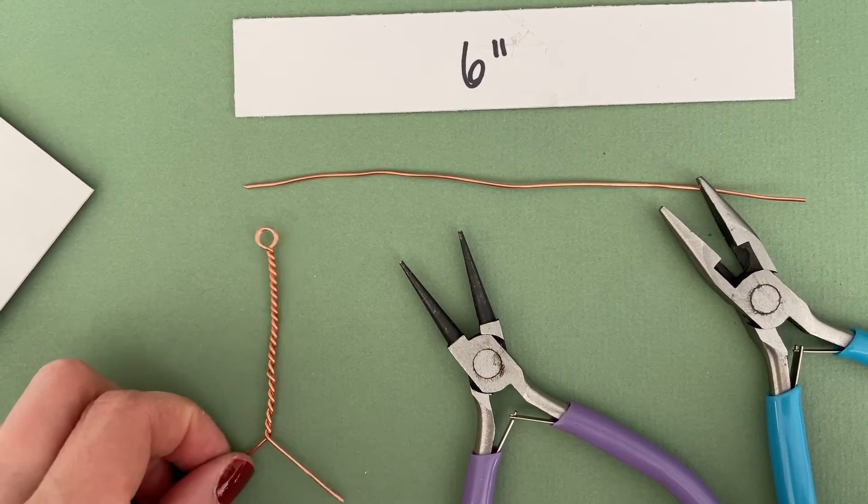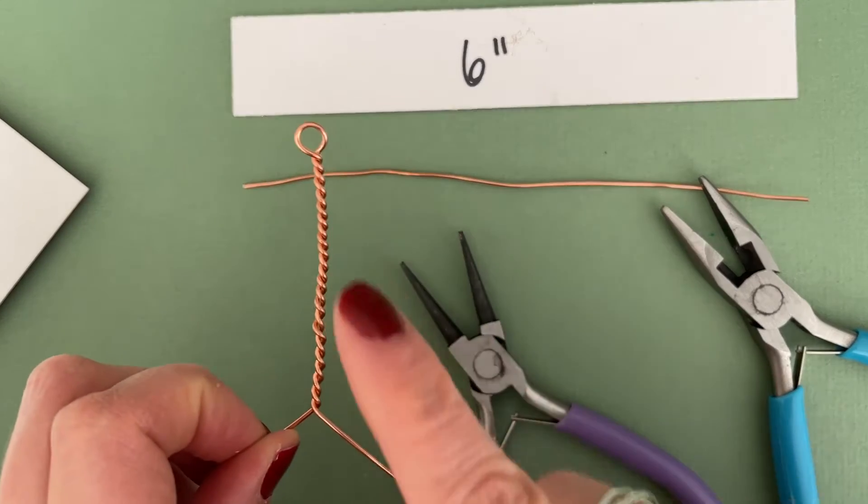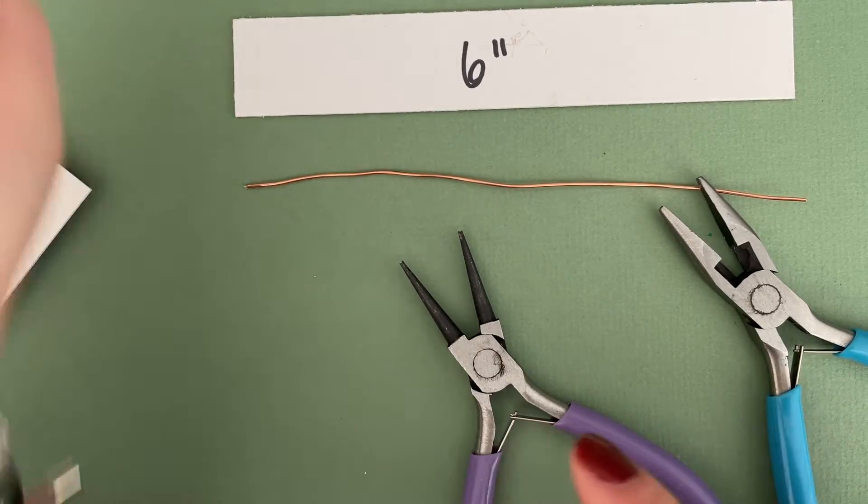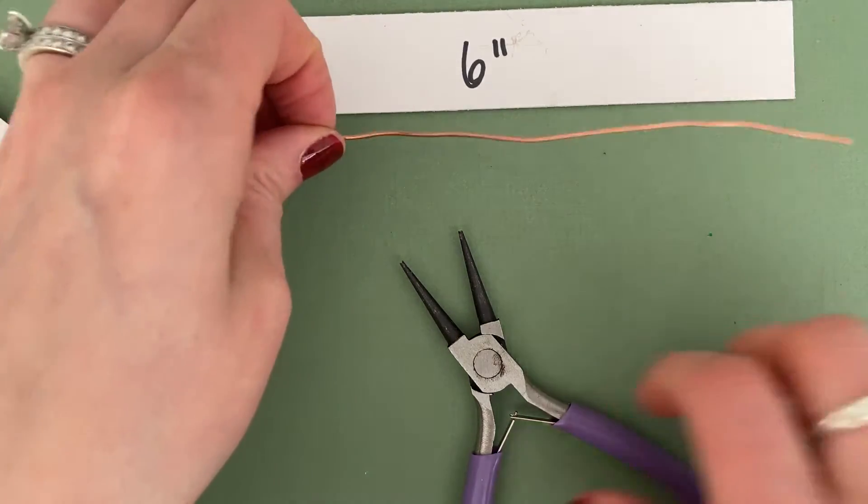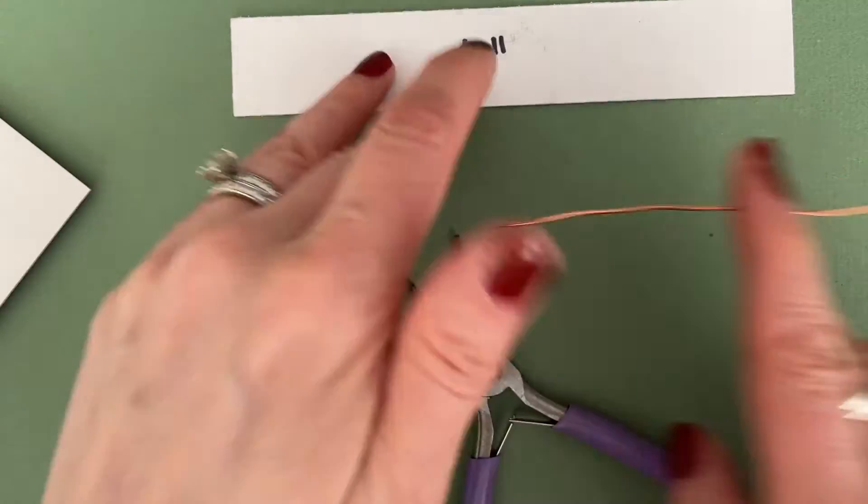In this tutorial, I'm going to share with you some steps to create twisted wire. I'm using 18 gauge wire and I'm going to start with a piece that's about six inches long.